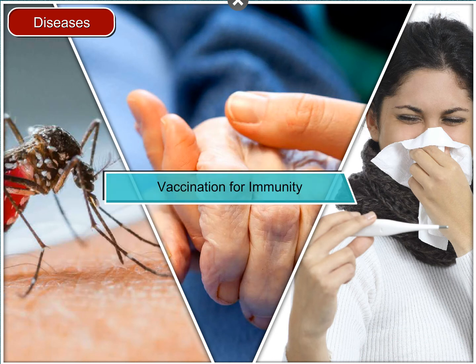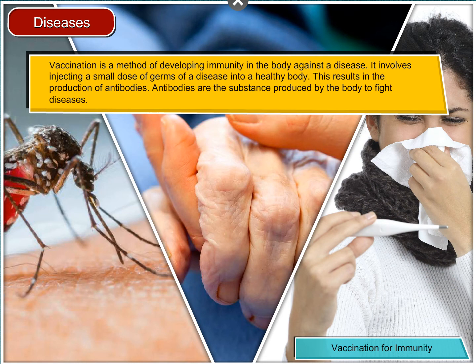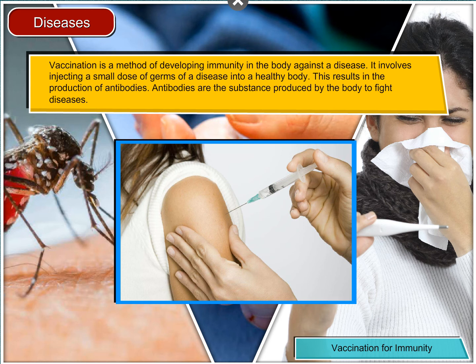Vaccination for Immunity: Another way of protecting our body from certain diseases is to acquire immunity against them. Immunity can be defined as the ability of the body to resist and fight diseases or germs. This can be done through the process of vaccination. Vaccination is a method of developing immunity in the body against a disease. It involves injecting a small dose of germs of a disease into a healthy body, which results in the production of antibodies. Antibodies are the substances produced by the body to fight diseases.